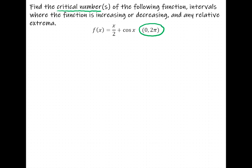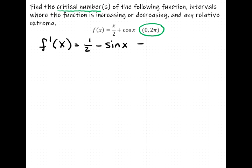We're going to need the derivative of the function. Our function is x over 2 plus cosine of x, so the derivative f′(x) equals 1/2 plus the derivative of cosine, which is negative sine of x. The sine function is never undefined, so we just need to find when this derivative equals 0.